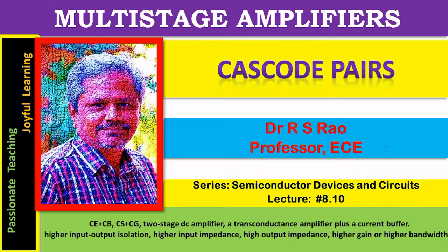The CE stage or CS stage is able to provide higher gains and larger impedances, but because of Miller's capacitance, they cannot work at higher frequencies and cannot provide larger bandwidths. So they are associated with the drawback of lower frequency operation and smaller bandwidths. To overcome this problem, those stages in the case of BJT version are modified by adding another stage. In the BJT version, the CB stage is connected at the output terminals of the CE stage.